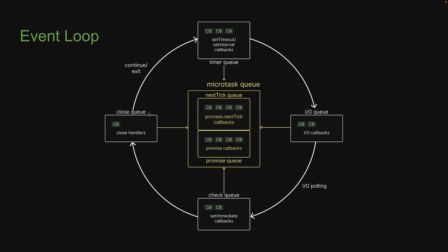Fourth, we have the close queue. This contains callbacks associated with the close event of an async task. Finally, we have a microtask queue at the center — this is actually two separate queues. The first is called the nextTick queue and contains callbacks associated with process.nextTick, which is specific to Node.js. The second is the promise queue, which contains callbacks associated with native promises in JavaScript. An important point: timer, IO, check, and close queues are all part of libUV. The two microtask queues, however, are not part of libUV, but they are still part of the Node runtime and play an important role in the order of execution of callbacks.